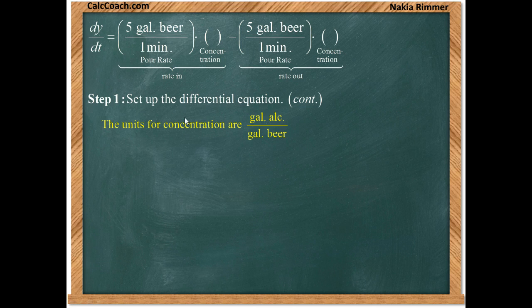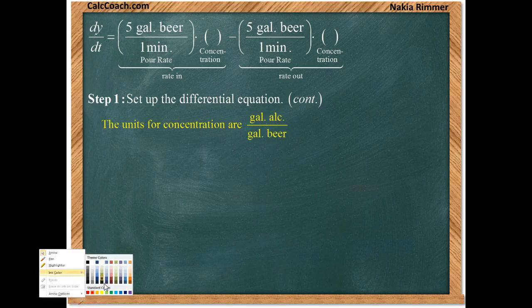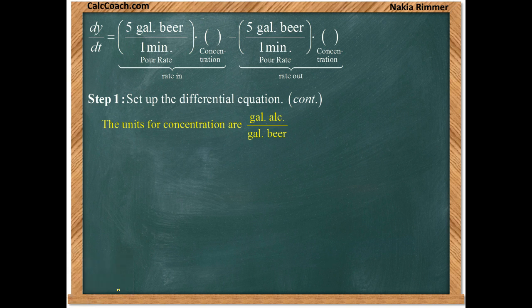What exactly is the concentration? What's the units for concentration? In the end, we're supposed to end up with gallons of alcohol divided by minutes. Think of it as like a chemistry cancel the units kind of question where we need to get the units to be gallons of alcohol per minute. So concentration will be gallons of alcohol divided by gallons of beer. It's going to be plugged in in place of this set of parentheses here, and so the gallons of beer must cancel out.